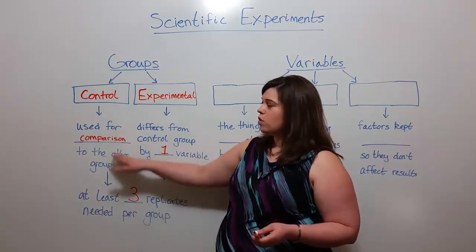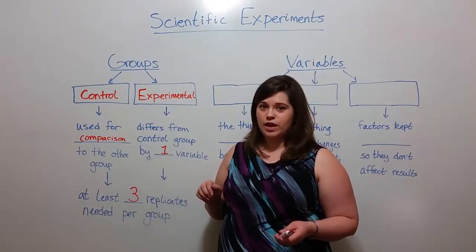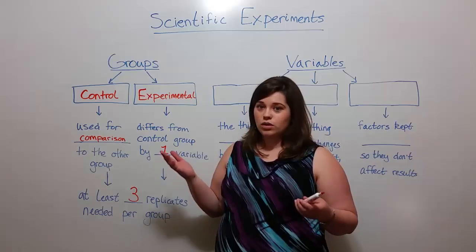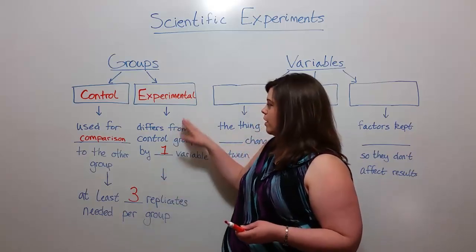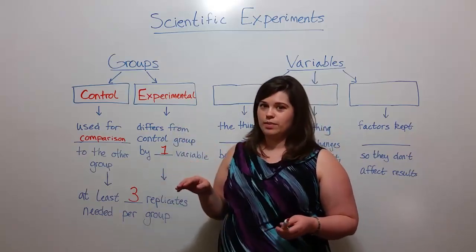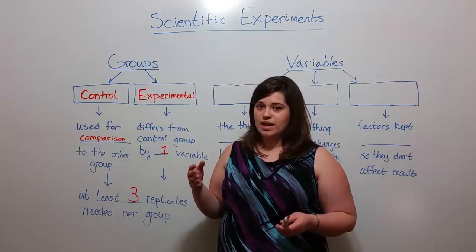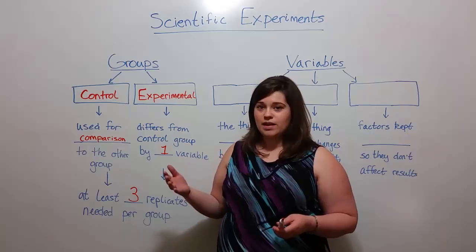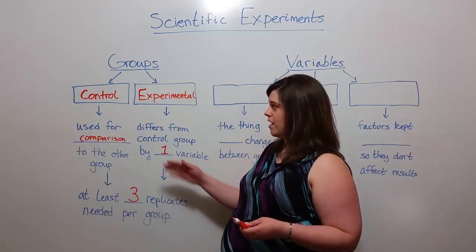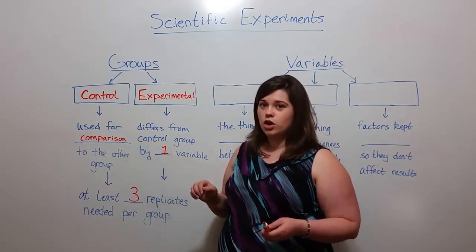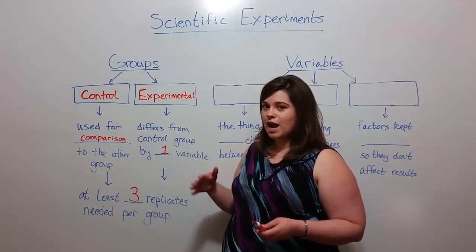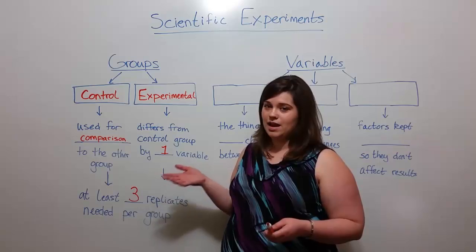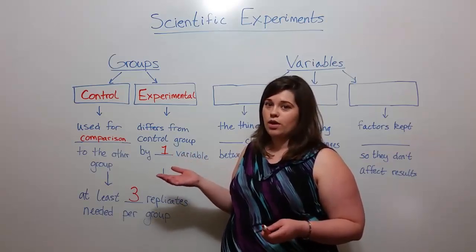The control group might be three plants that are grown in natural light. The experimental group might be three plants that are grown only in purple wavelength light. In an experiment like this, you are comparing the two groups to determine how the type of light — either natural light or purple wavelength light — affects the growth of the plants.